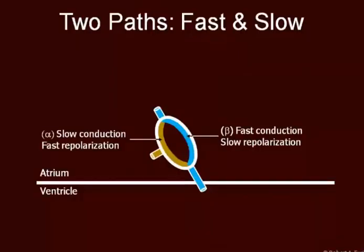In the AV node, there are two pathways: a fast pathway and a slow pathway. The fast pathway is described here in blue, and here in brown we see the slow pathway. Signals can come in through either of these fibers. The fast pathway also has a slow repolarization, whereas the slow conduction pathway repolarizes rapidly.